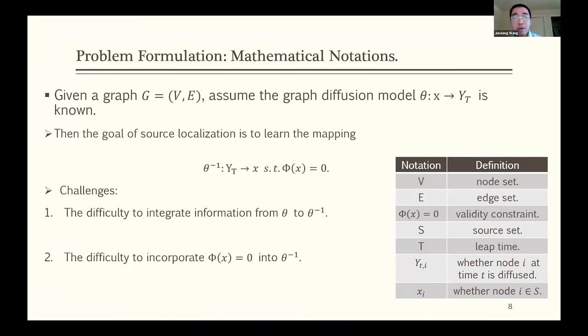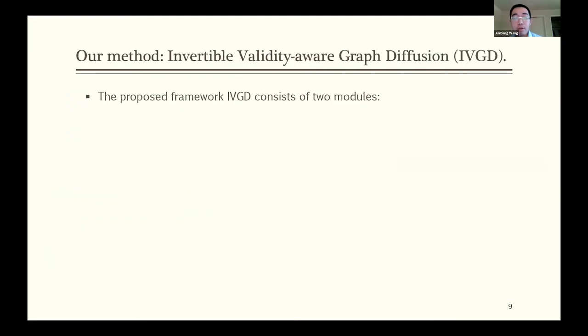Before we move to our framework part, we need to formulate this problem in a mathematical formulation. We are given a graph G, and we assume that the graph diffusion model θ is known, where θ maps from x, which is the source vector, to y, which is the diffusion vector. The goal of the source localization is to design the inverse of θ, which starts from y to x. And it is also subject to a constraint ψ(x) equals zero. So ψ is a validity constraint.